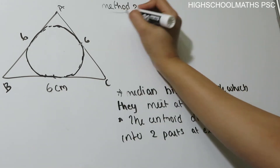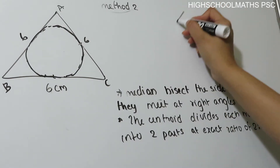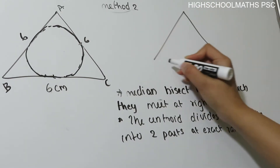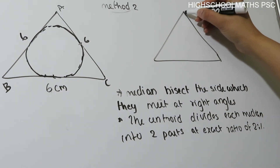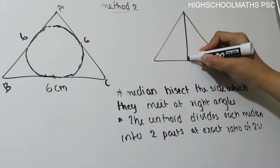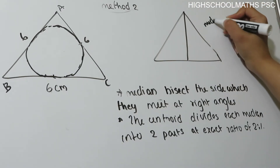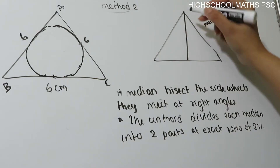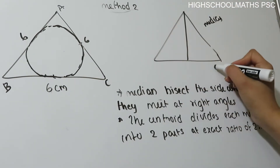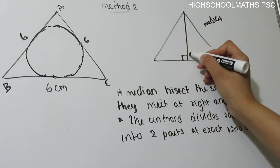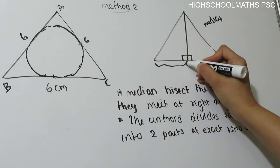This is the second method. We will take the same triangle with three sides of the equilateral triangle. Here we have a right angle called the Median. The Median of an equilateral triangle bisects the opposite side at 90 degrees.